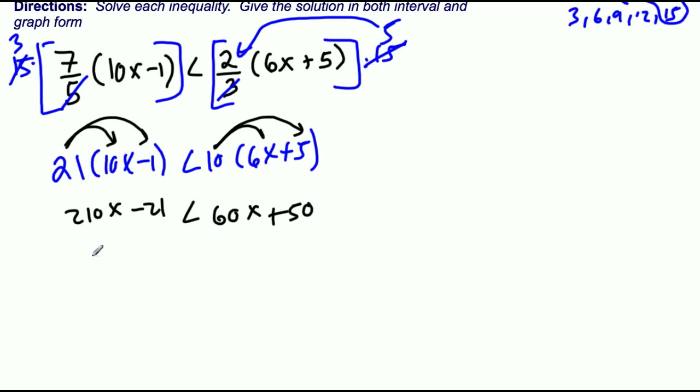And add 21 at the same time right here. So I'll get 150 is less than 71x. So basically all I did was I subtracted 60 from 210 and I added 21 to 50. So then I divide by 150.